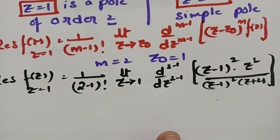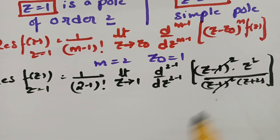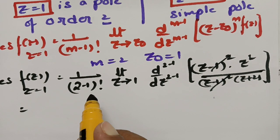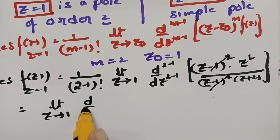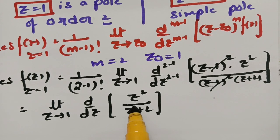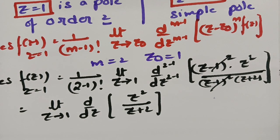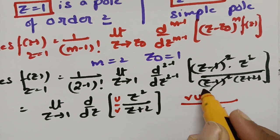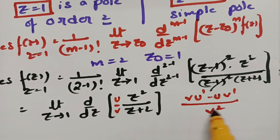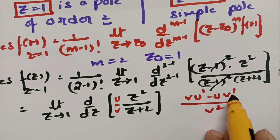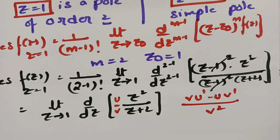We need to differentiate z²/(z+2) once using the u/v rule: d/dz(u/v) = [v·u' − u·v'] / v². Here u = z², u' = 2z, v = (z+2), v' = 1. So the derivative is [(z+2)·2z − z²·1] / (z+2)².